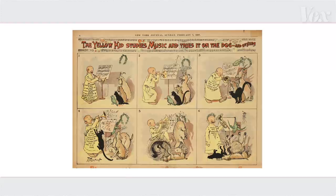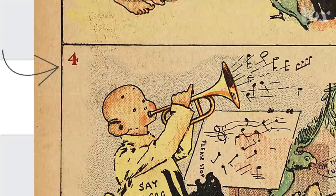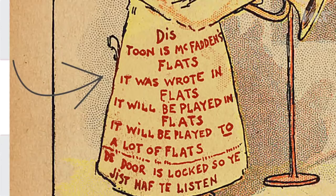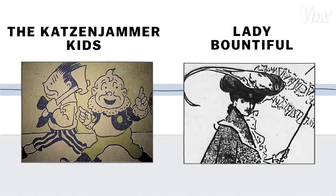Comics were experimental. Panels sometimes had to be numbered so you knew the order to read them in, and dialogue rarely appeared in speech bubbles. Sometimes words showed up on The Yellow Kid. Two comics pushed that innovation to the next level and invented a lot of what we know today, probably including Grawlixes.